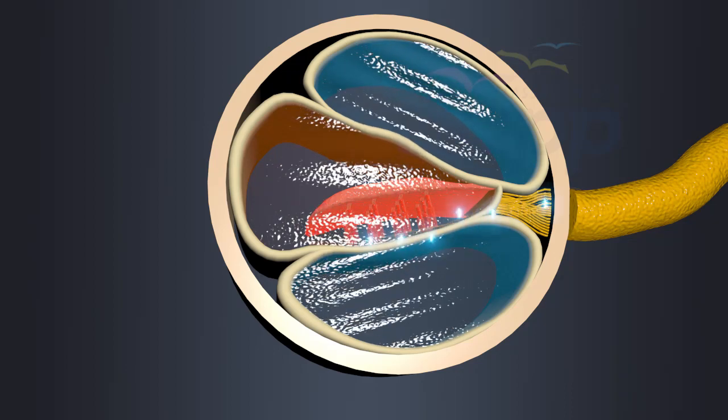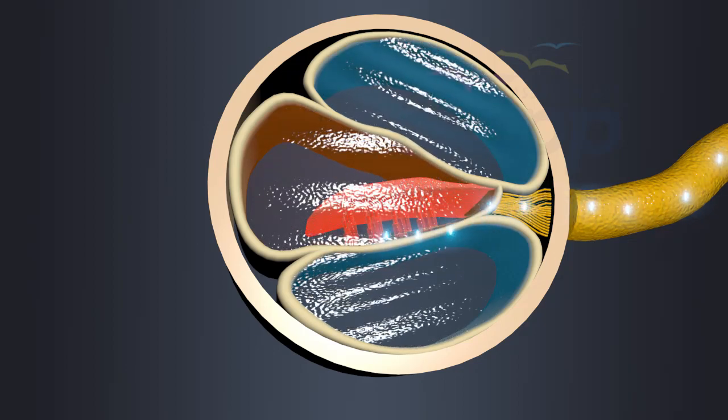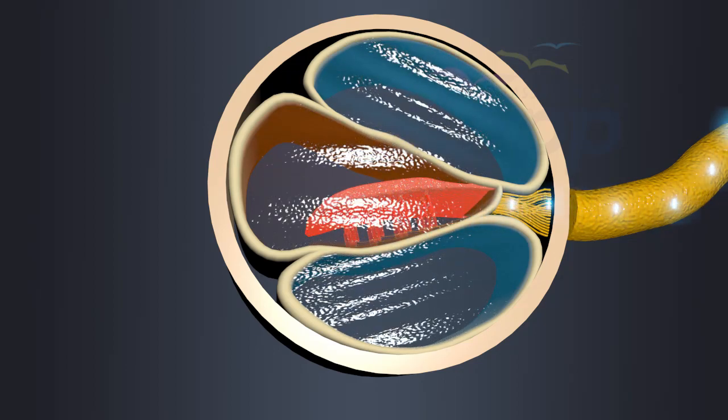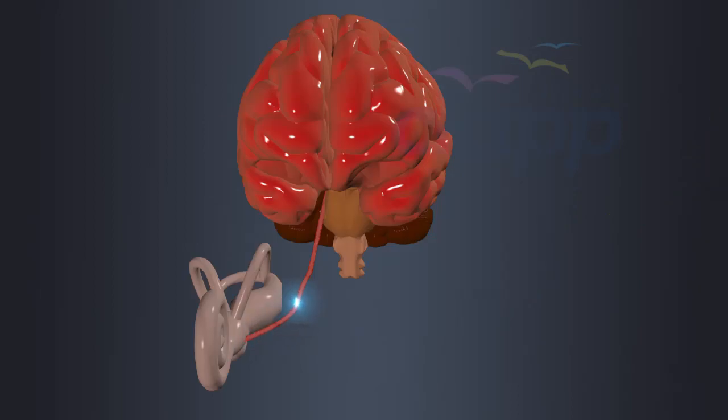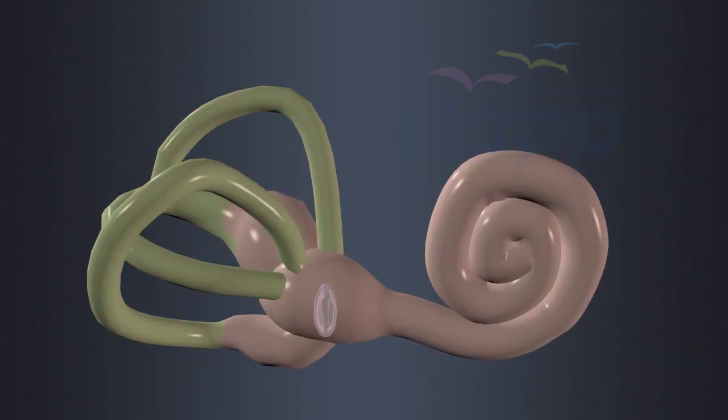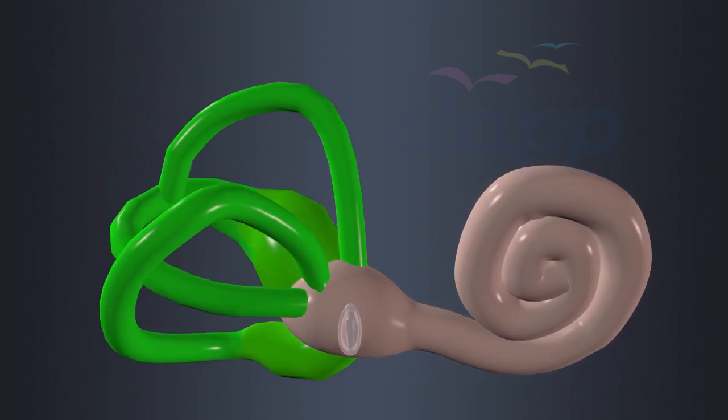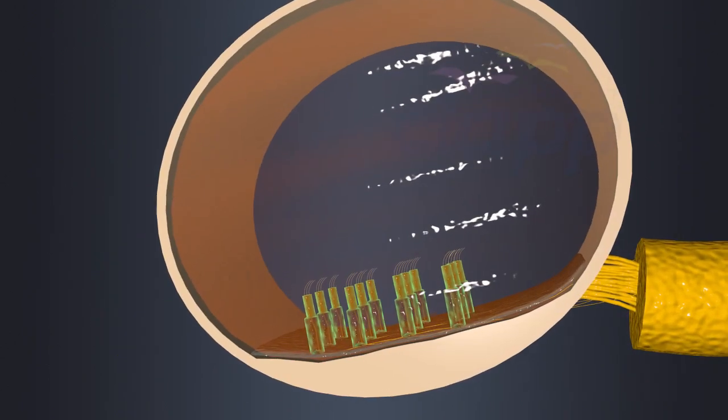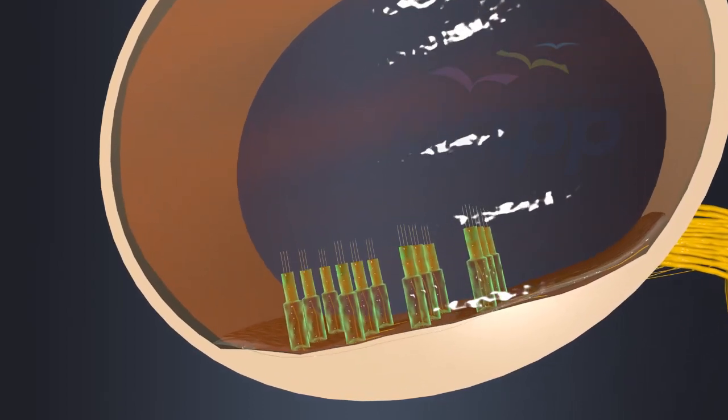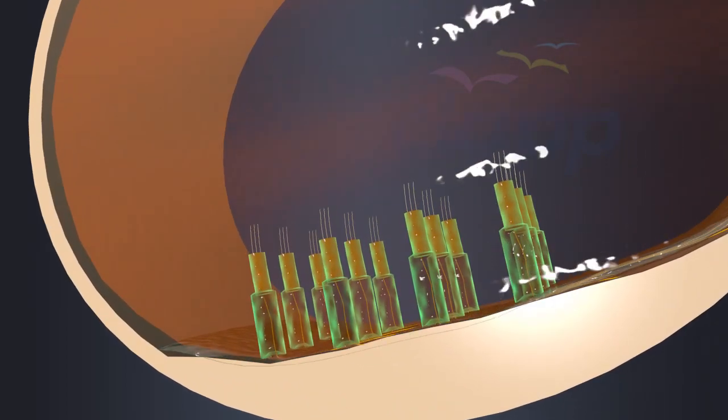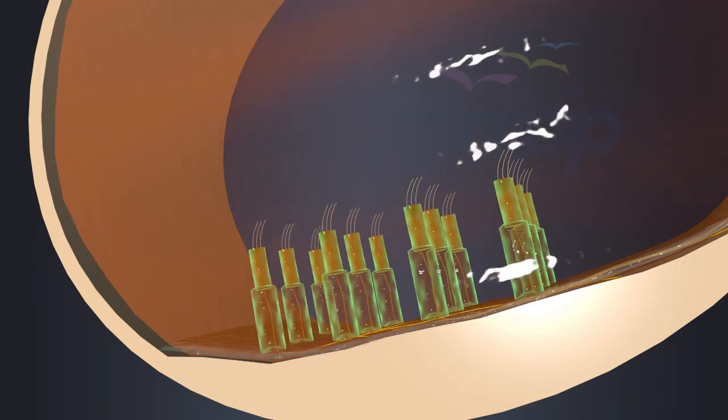Auditory nerves carry these electrical signals generated by the hair cells and transmit them to the auditory processing centers in the brain where these signals are interpreted as sounds. There are three semicircular canals and two vestibules in inner ear which are filled with endolymph fluid and contain hair cells which help to balance the body.